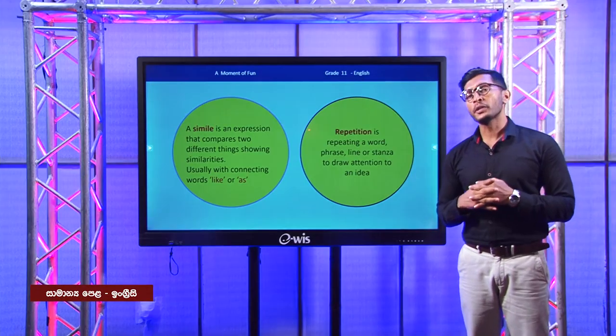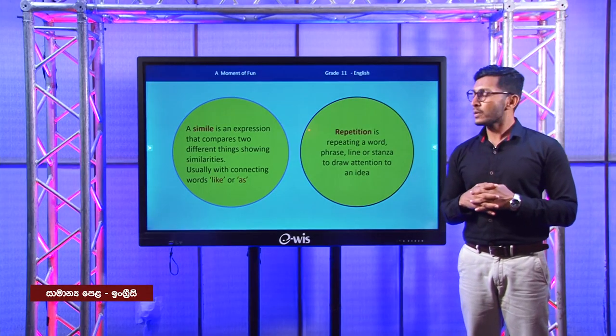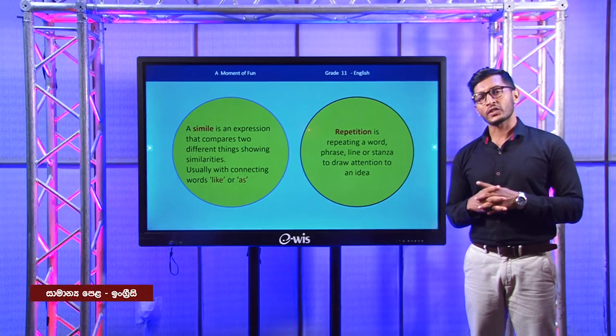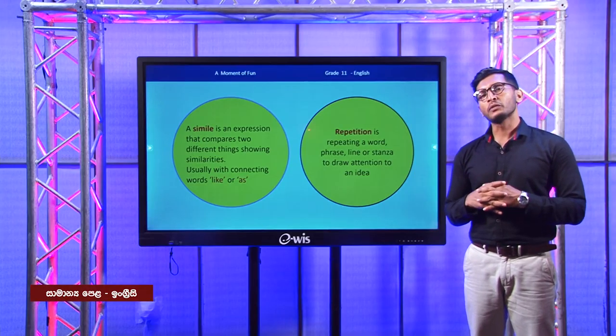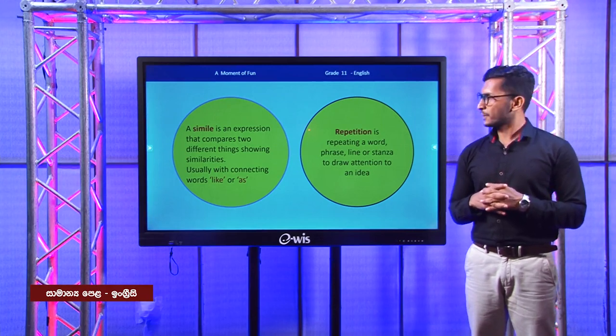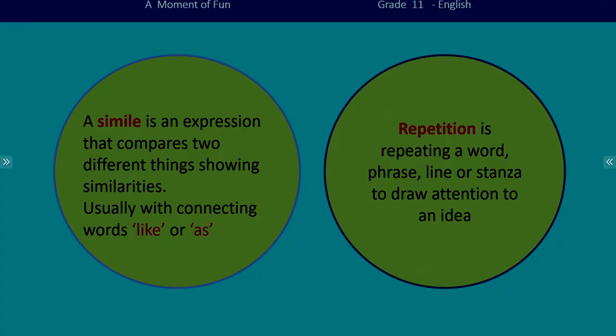Now I am going to remind you of another common poetic technique. We are not going to talk about these poetic techniques in detail as we do in literature, because our objective of the lesson is to read and respond to a simple poem. So what is a simile? Simile is an expression that compares two things showing similarities. Similes often have the words 'as' or 'like'.